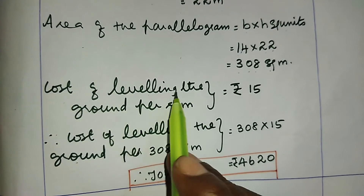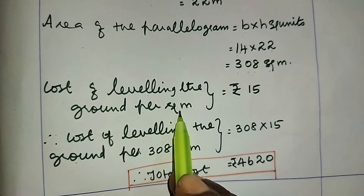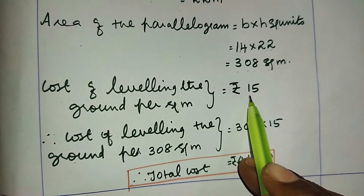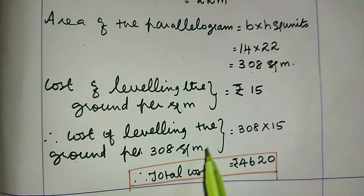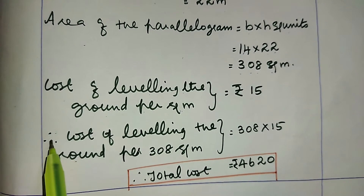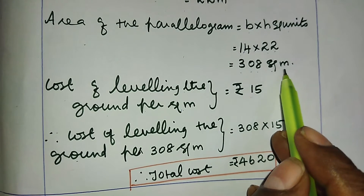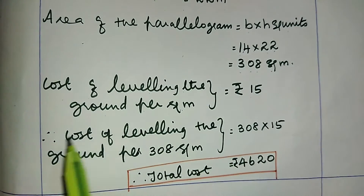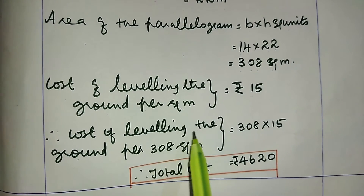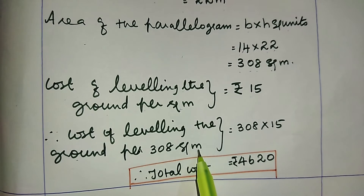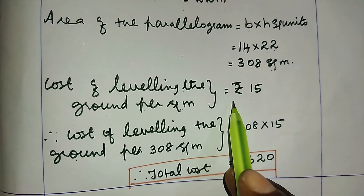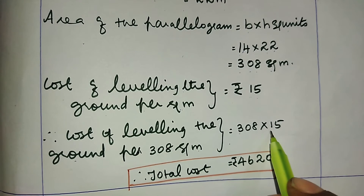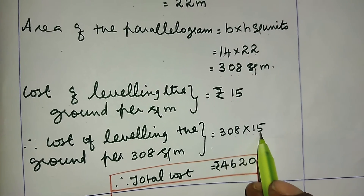The cost of leveling the ground is rupees 15 per square meter. For 1 square meter it is 15 rupees, so for 308 square meters we multiply 308 into 15.